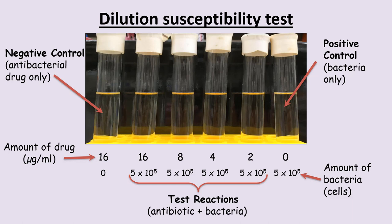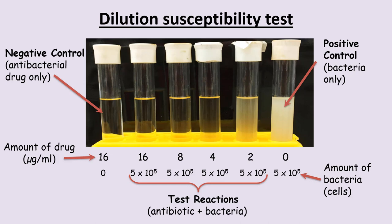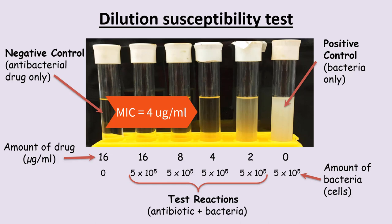After incubation, the tubes are inspected for cloudiness or turbidity. The positive control is very cloudy, confirming bacterial growth and that the test is working correctly. The negative control remained clear. Among the test tubes, the tube that received 2 micrograms per mL is cloudy, whereas tubes with 4, 8, or 16 micrograms per mL appear clear. Therefore, the minimal inhibitory concentration — the least amount of drug needed to prevent visible growth — is 4 micrograms per mL.